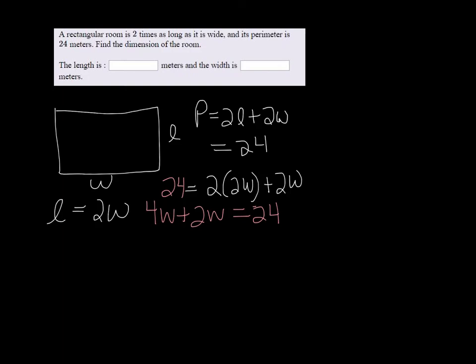Alright, so that's 6W equals 24. So the width must be, when you divide both of them by 6, you get 4.